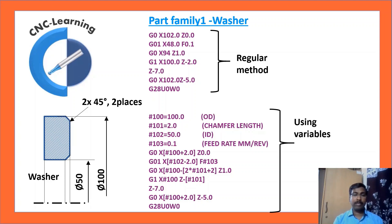So, in this case, we have already explained, in this part family, the dimensions which are going to vary with the different parts are OD, ID, and chamfer. So, let us take OD as #100. So, in this case, let us take value as 100. #101=2. That is the chamfer length. #102=50. That is ID. #103 equal to 0.1. That is feed rate in mm per revolution.